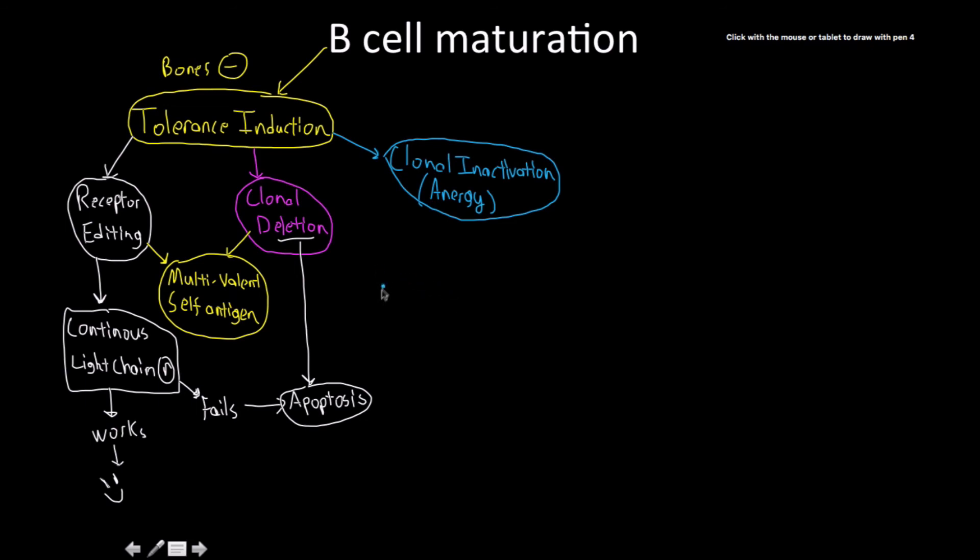For anergy, whereas those mechanisms were about multivalent antigens, anergy is about monovalent self-antigen. We basically just shut them off, or in the case of certain T-cells, kill them. Usually we inactivate them and let them die. They become inactive, and five days later at most, they undergo apoptosis through regular cellular decay.